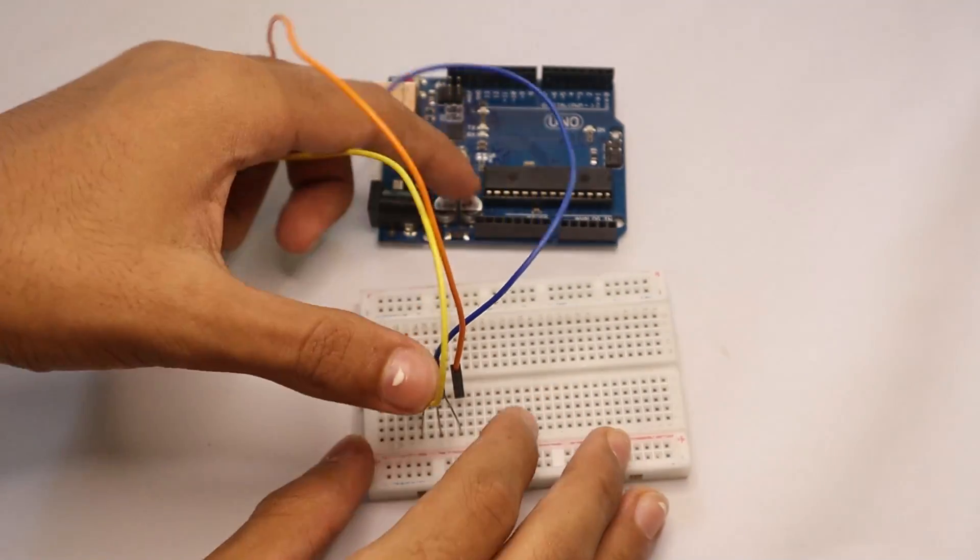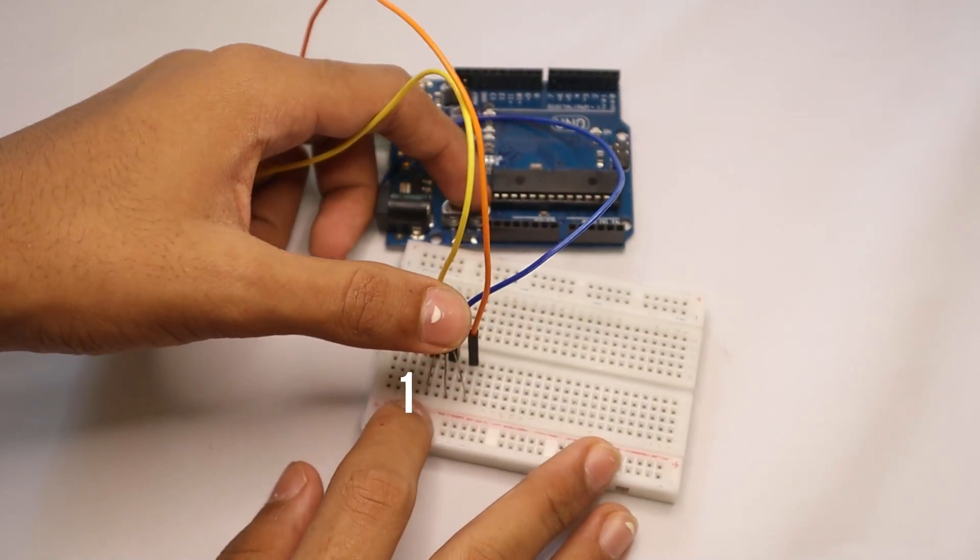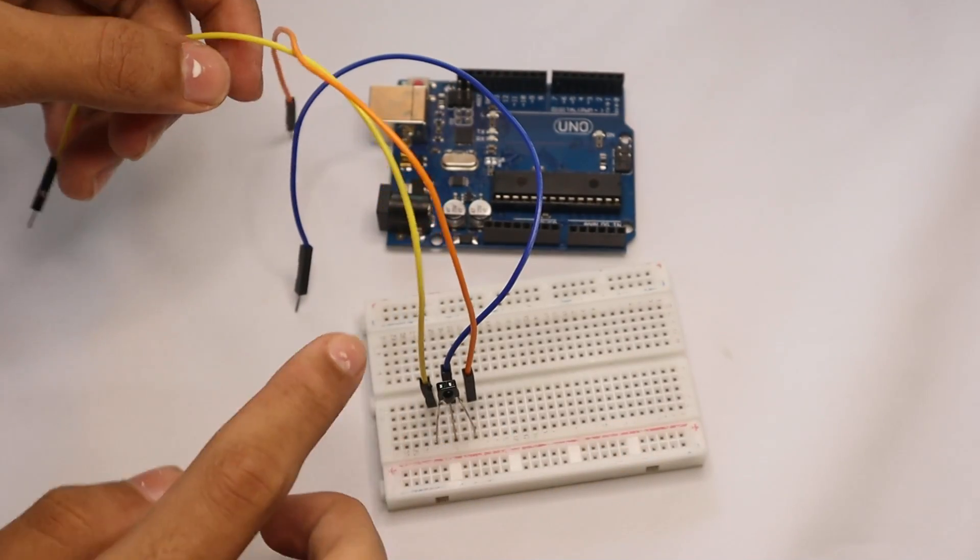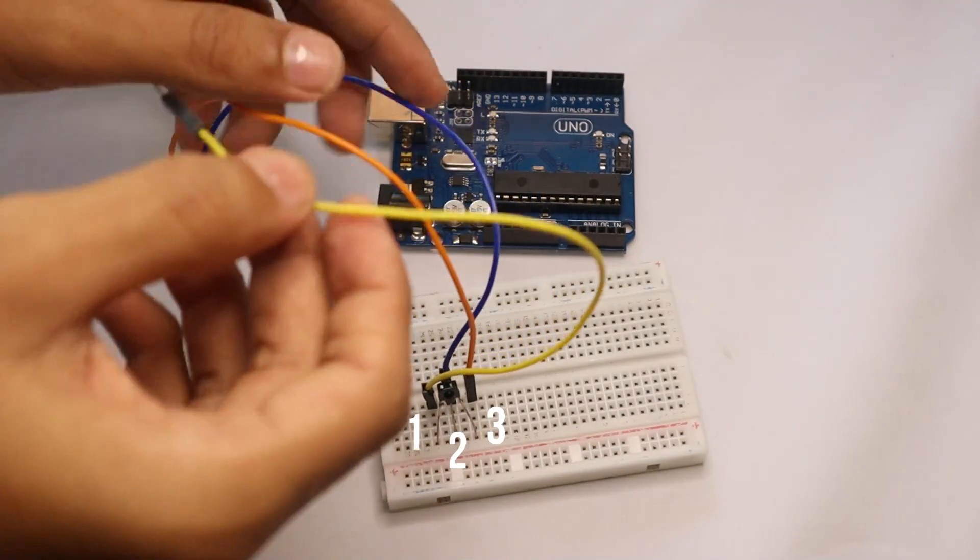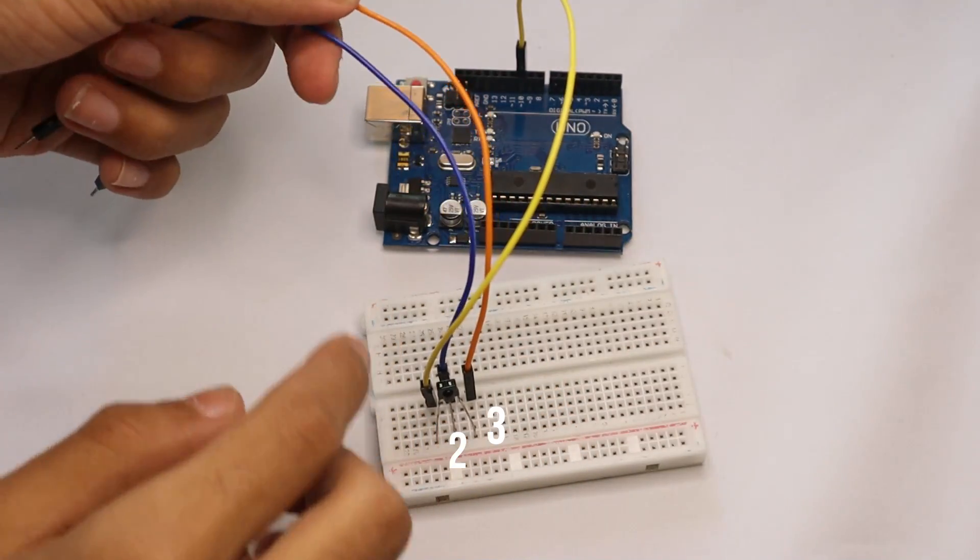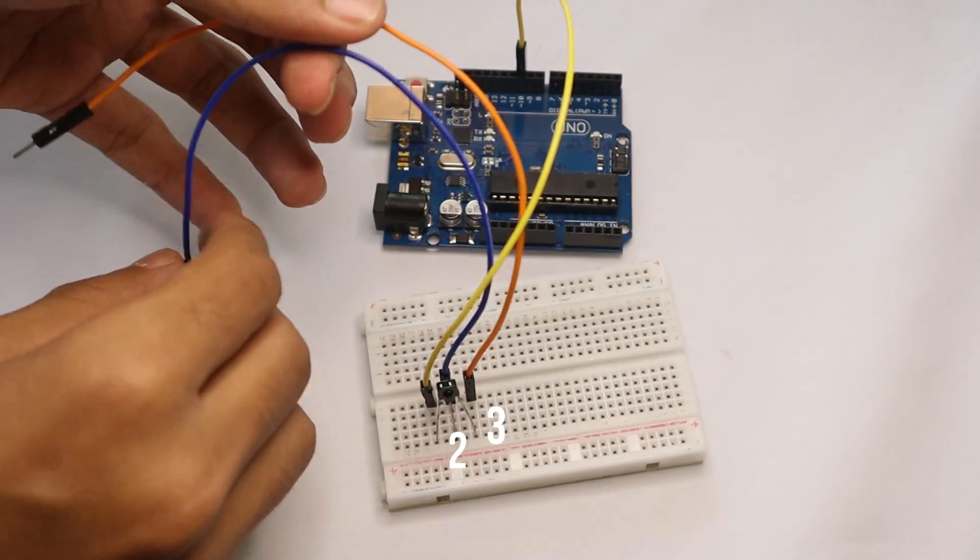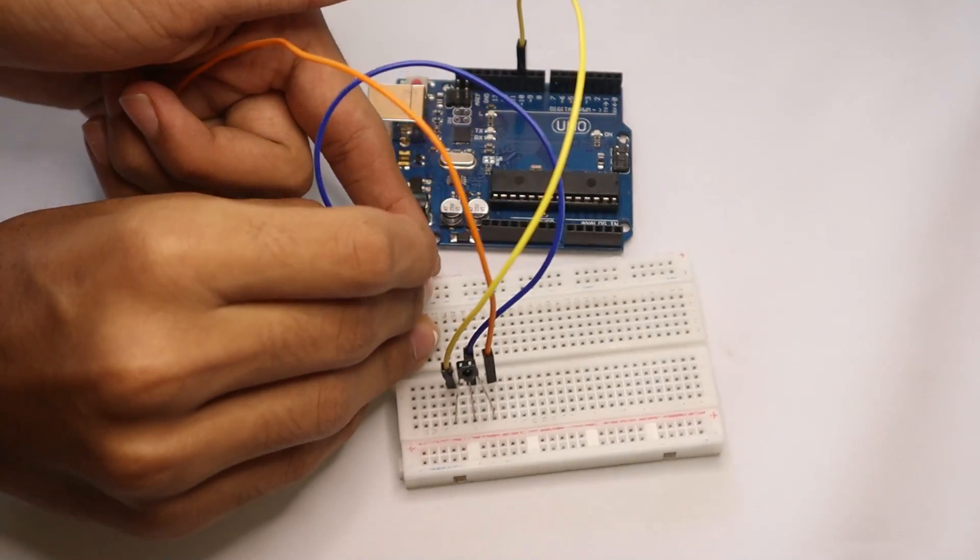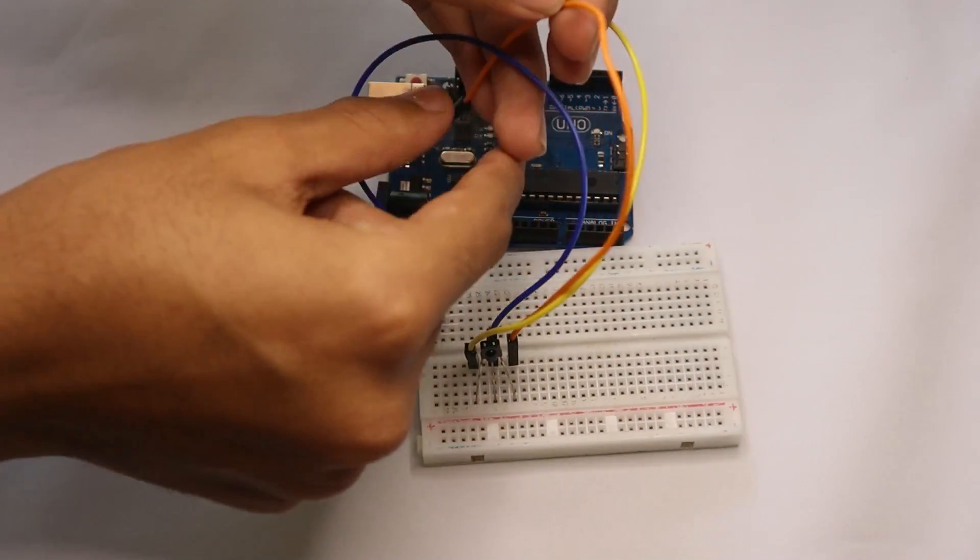Now let's name the IR receiver leads one, two, and three. Now the one is the out pin, so connect that to pin 10. Now the other two wires are two and three, so connect two to positive and three to negative.